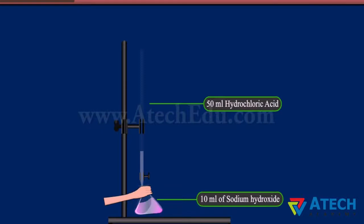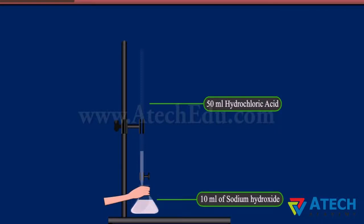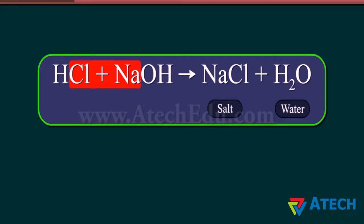Shake the conical flask while you allow the hydrochloric acid to flow drop by drop inside the conical flask. You will observe that when sufficient quantity of hydrochloric acid is added, the color of sodium hydroxide solution changes from pink to colorless. This is because neutralization occurs at this point. The chlorine of hydrochloric acid combines with sodium of sodium hydroxide to form salt — sodium chloride. The hydrogen of hydrochloric acid combines with the hydroxide part to form a water molecule.